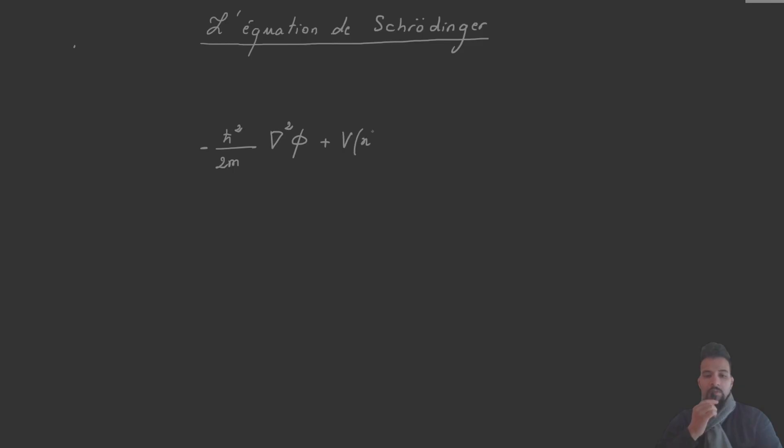The Schrödinger equation is presented in the following form. The left side represents the total energy of the particle. It includes kinetic energy and potential energy. The right hand side, i h bar d psi over dt, represents the evolution of the quantum state of the particle over time.